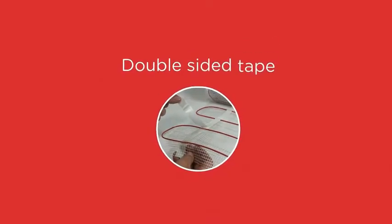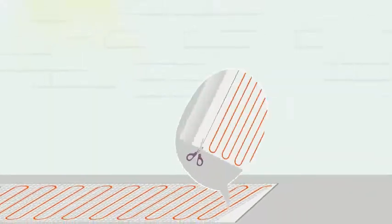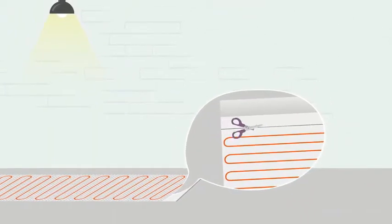The tape on the mat is double-sided, so you peel off the liner and affix either side of the mat to the floor. Cut the mesh of the mat to fit the area you want to heat.